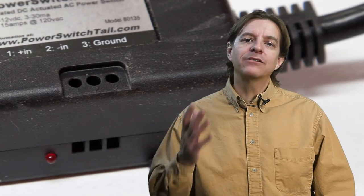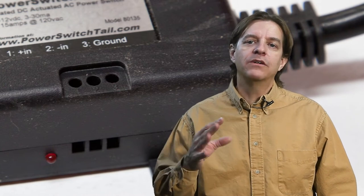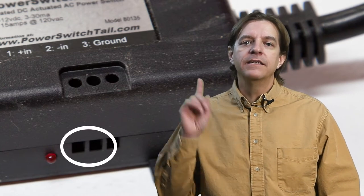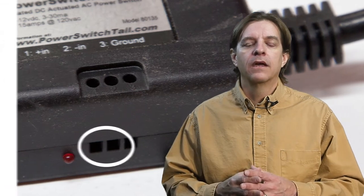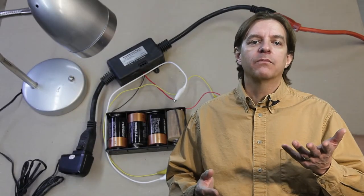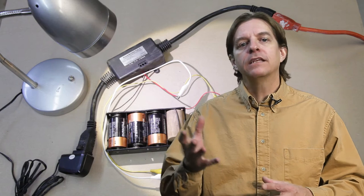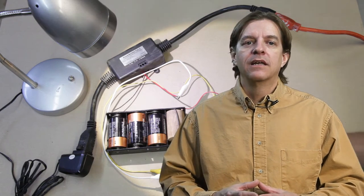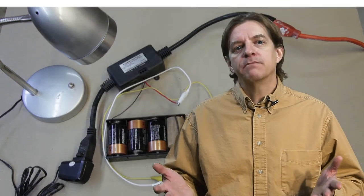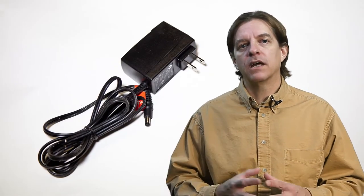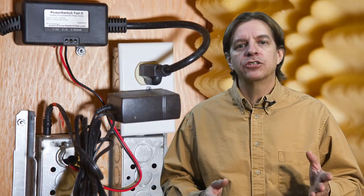If you recall, the power switch tail requires 3 to 12 volts DC applied to these two connectors to cause the tool to turn on. Batteries are of course one source of power for this, but they need to be replaced on occasion. Since I didn't want to deal with replacing batteries, in my application I decided to use a surplus wall wart style power supply. I had a bunch of these lying around and figured this would be a good application for one of them. I plug it into the same outlet I plug the power switch tail into.